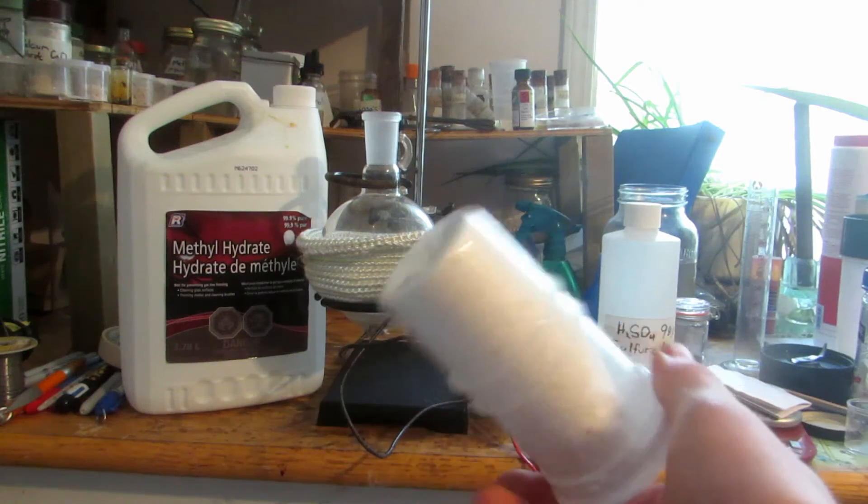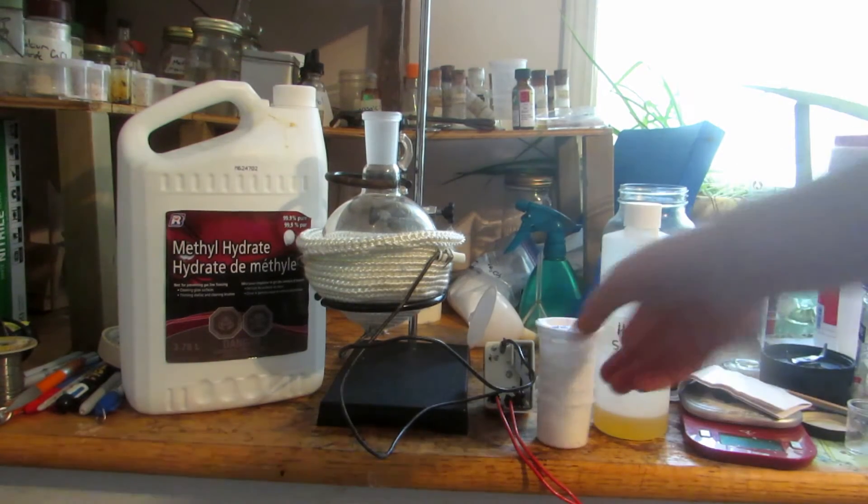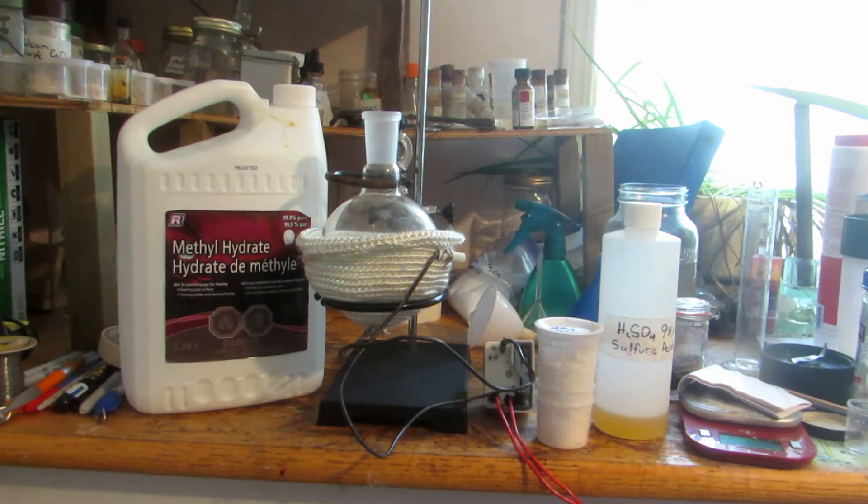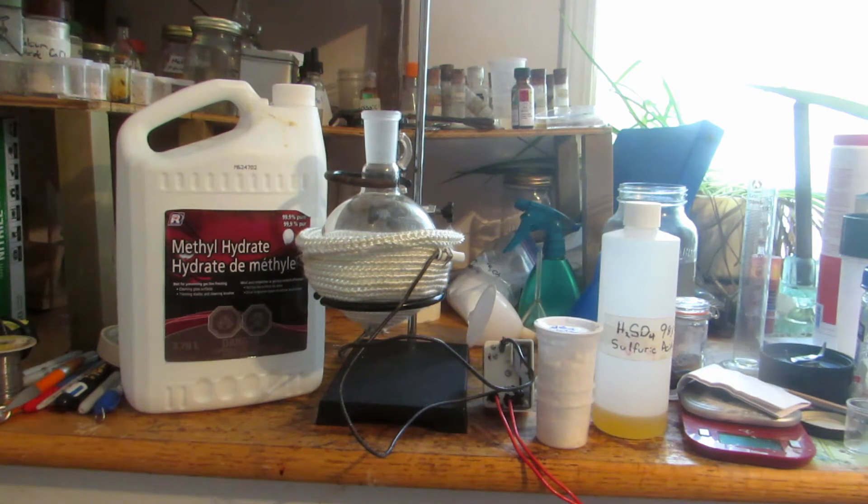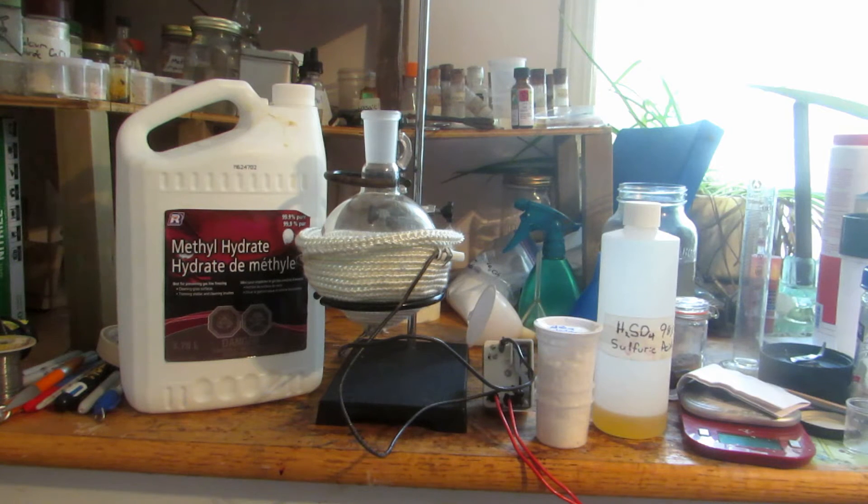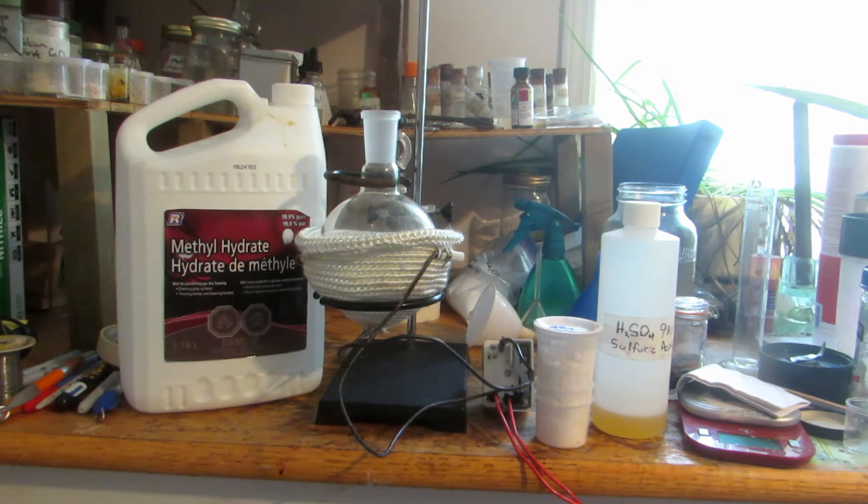I used most of the salicylic acid to make phenol in a previous video for other applications, but I saved 20 grams because I wanted to make a chemical known as wintergreen.